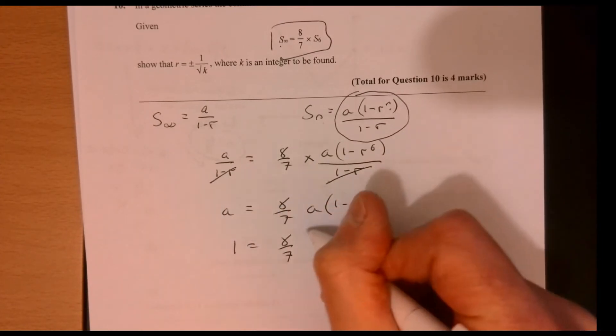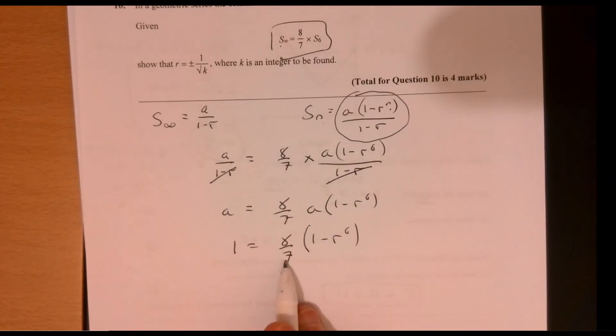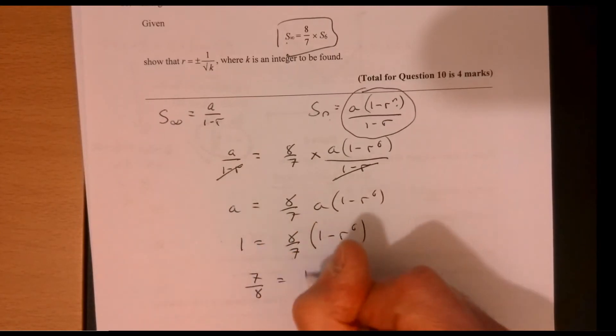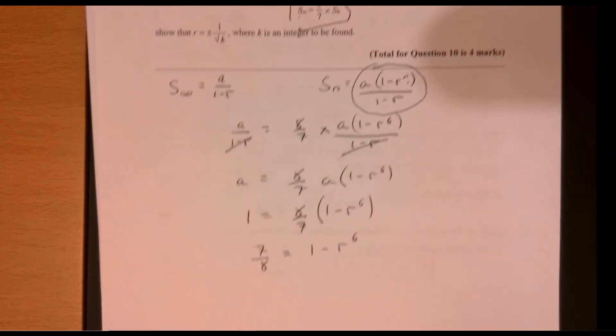1 minus R to the 6. So let's bring this one over onto this side. So we've got 7 eighths equals 1 minus R to the 6.